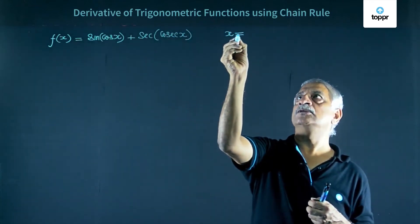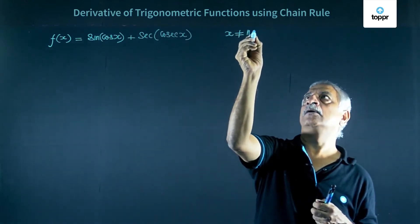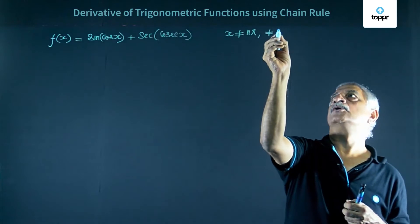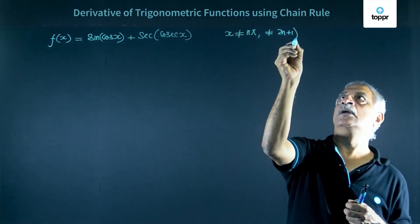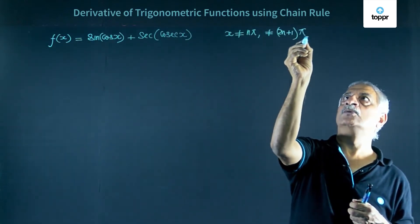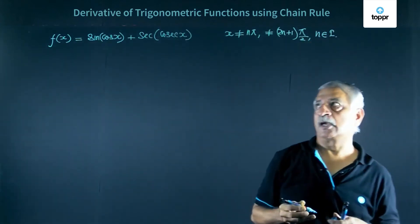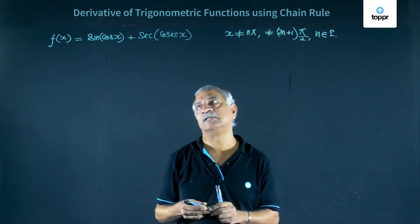where x is not equal to n pi, not equal to 2n plus 1 times pi by 2, where n is belonging to integers, as the functions must exist.